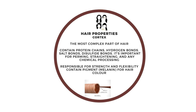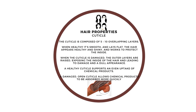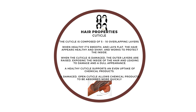The cortex is the most complex part of the hair. It contains protein and hydrogen salt bonds — that's sulfur — and is very important for perming, straightening, and any chemical processing. It's also responsible for the strength and flexibility of the hair and contains the pigment melanin that gives hair its color. The hair cuticle is composed of five to ten overlapping layers. When it's healthy it is very smooth and lays flat. When it's not healthy it absorbs everything unnecessary, causing damage, so you have to be very careful — when the cuticle is not healthy, your hair starts to break.